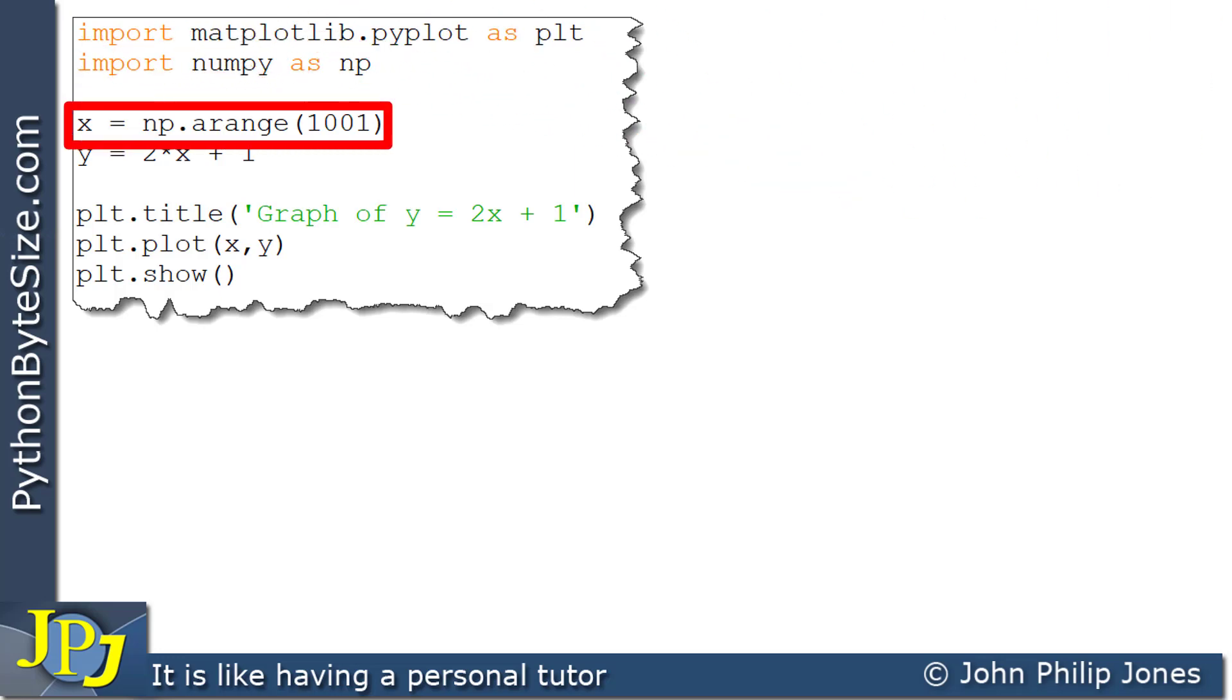This line will create a numpy array from 0 through to 1000, and this will create another numpy array based upon this here, which will be 2 times x plus 1, where the value of x is taken from this numpy array here.